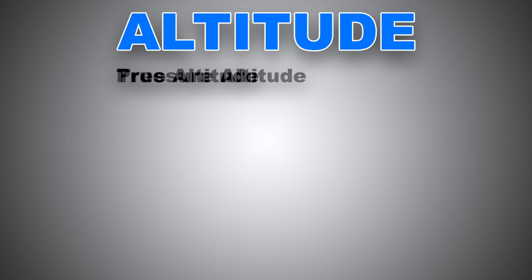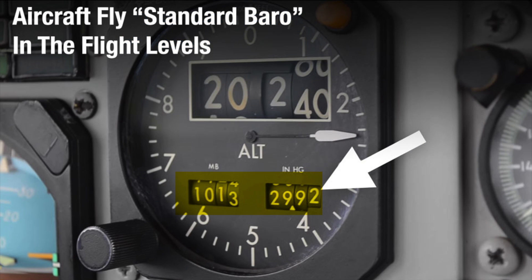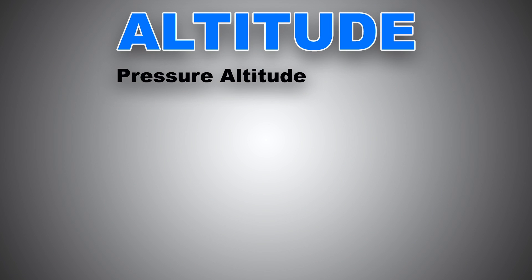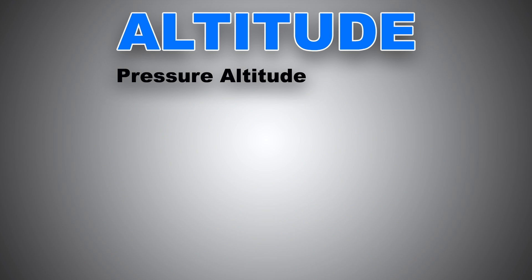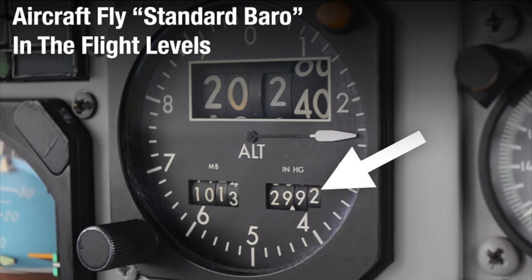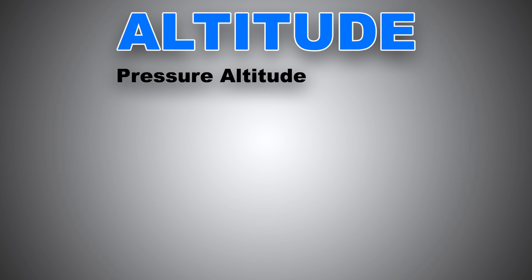Next is pressure altitude. Pressure altitude is the altitude we read off the altimeter when we set the subscale to 1013 hectopascals or 29.92 inches of mercury. This is the QNE setting we set when at or above the transition altitude. At or above the transition altitude, we fly flight levels, meaning all traffic have their altimeters' subscale set to standard pressure, which is 1013 or 29.92, depending on the unit they're using.